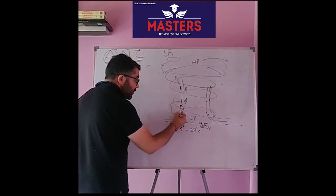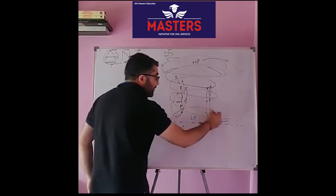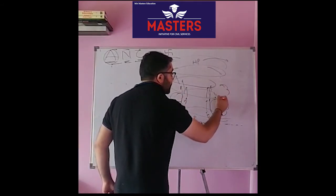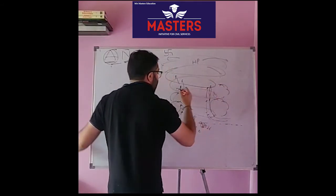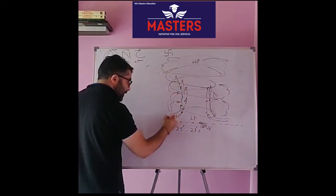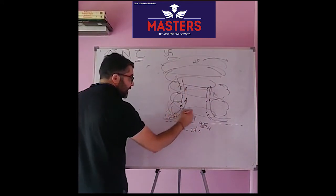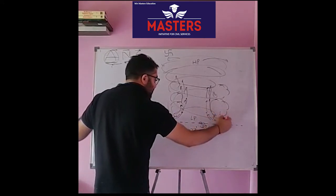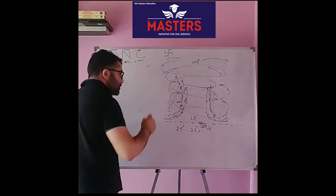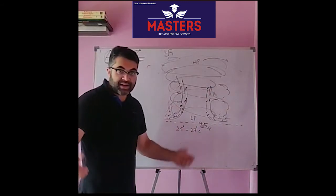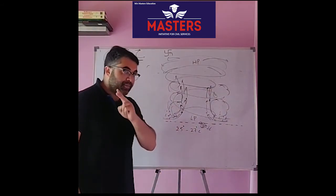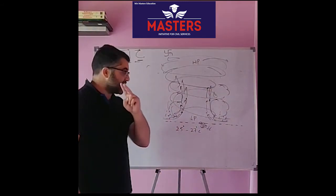As air masses rise up, we know they carry a lot of moisture. This leads to intense precipitation and huge rainfall in the adjoining areas of the tropical cyclone.